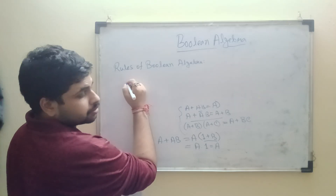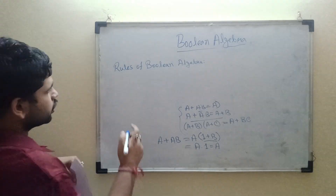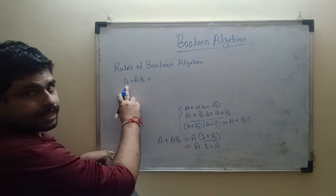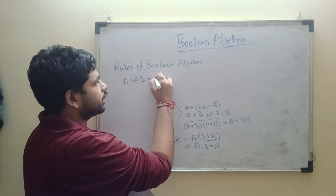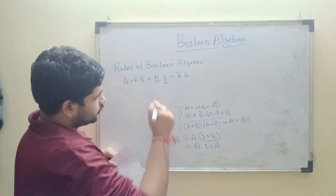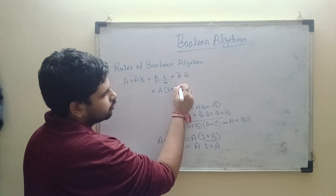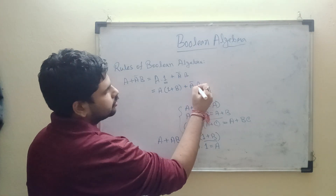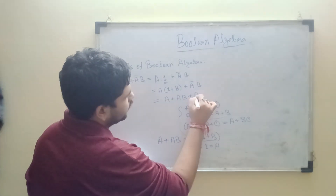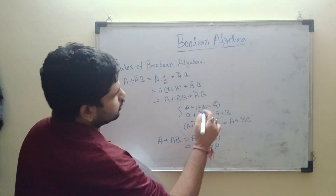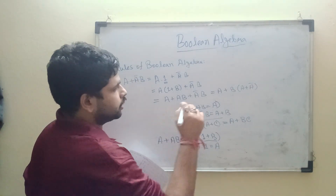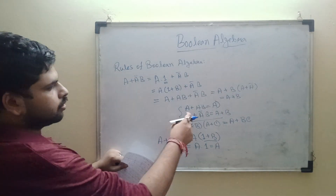To prove A + ĀB = A + B: rewrite A as A·1, so we have A·1 + ĀB. Replace 1 with (1 + B), giving A·(1 + B) + ĀB = A + AB + ĀB. Factor B from the last two terms: A + B·(A + Ā). Since A + Ā = 1, this gives A + B·1 = A + B. Proved.